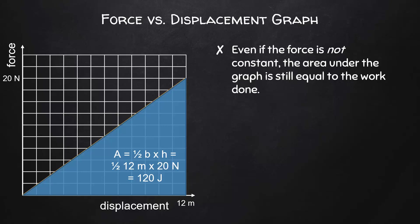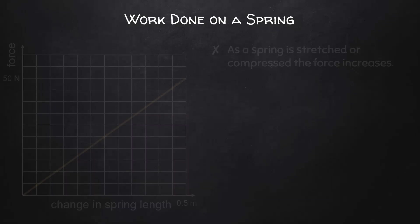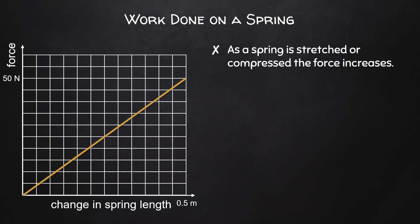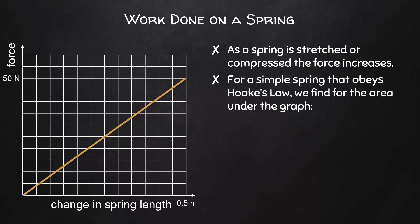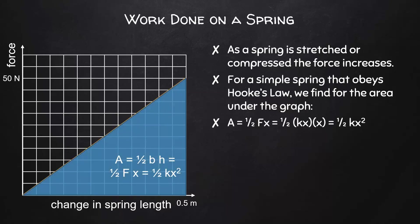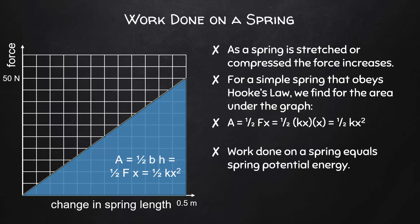This graph might look familiar because it's basically the graph of the force on a spring. As a spring is stretched or compressed, the amount of force applied to the spring increases. For a simple spring that obeys Hooke's Law, we find that the area under the graph is one-half times the force applied to the spring times the change in the spring length. We know that the force applied to the spring is kx, which gives us one-half kx squared for the area. The work done on a spring equals the spring potential energy.